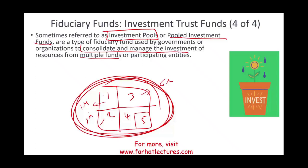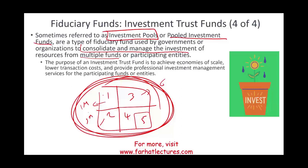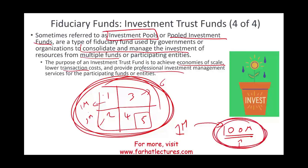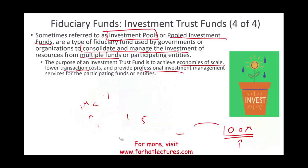Rather than each borough investing separately, it doesn't have to be just boroughs — it could be two or three cities or counties. Multiple governments create one trust fund and invest all their money together. Why would they do this? To achieve economies of scale. When you have a lot of money and give it to a professional finance organization, investing a hundred million dollars gets you treated very differently than investing just one million. They'll lower your transaction costs, give you more advice, and take better care of you because of the larger amount.